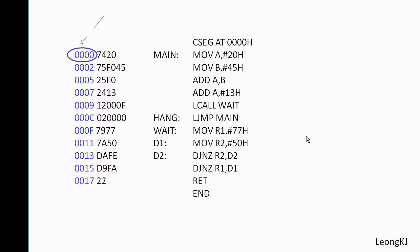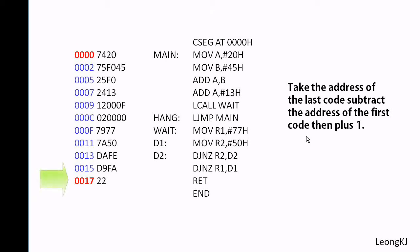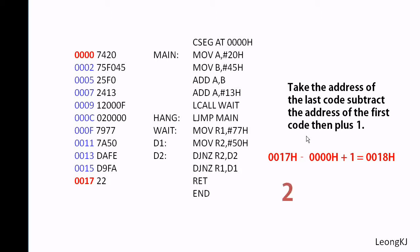This is the address of the first code. 18 hex is 24 in decimal.